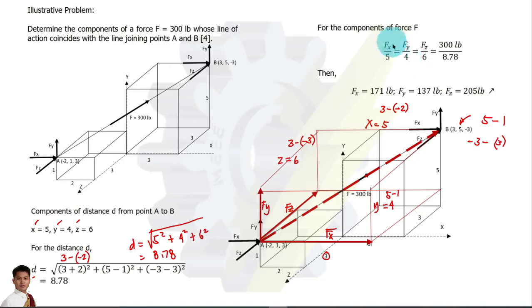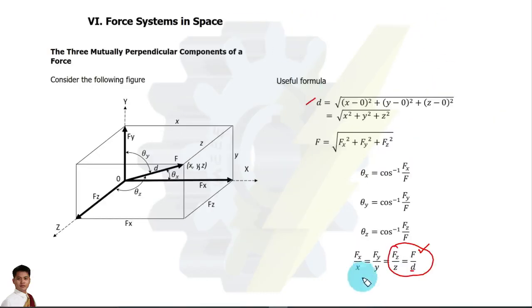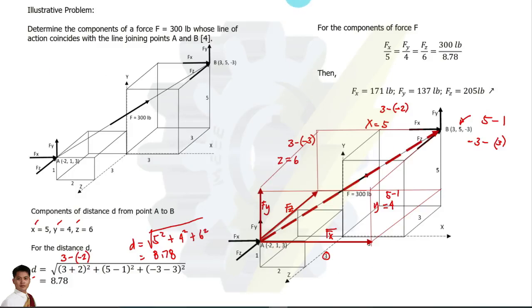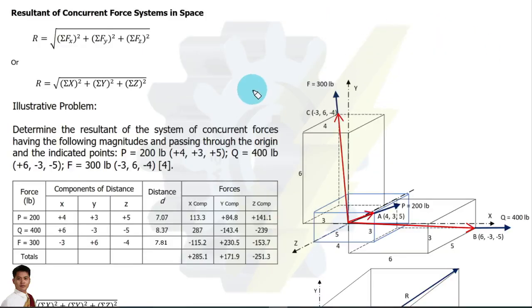We can now use our equations or ratio and proportion to solve for the unknowns Fx, Fy, and Fz. From our formula, Fx over x equals F over d — this relation is used to solve for each component. Similarly, Fy and Fz can be solved using the same approach.